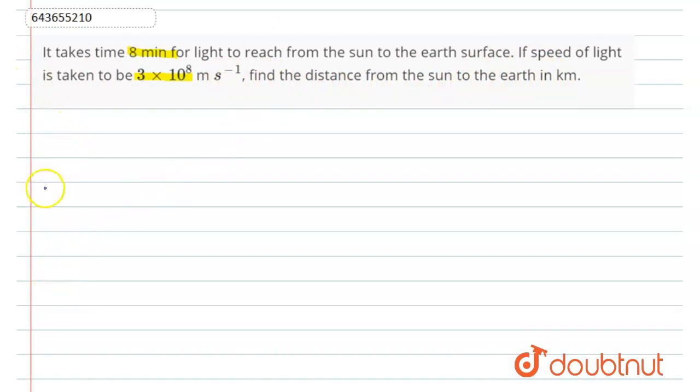See friends, in this question we have to find the distance between the sun and the earth. So speed of light is 3 × 10^8 meters per second, and time given is 8 minutes, which is equal to 8 × 60, which is equal to 480 seconds.